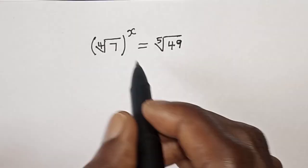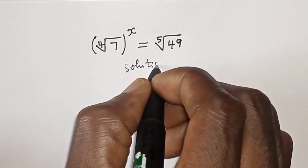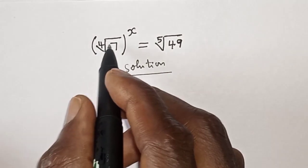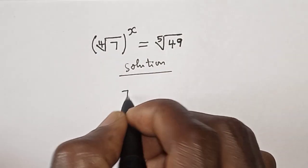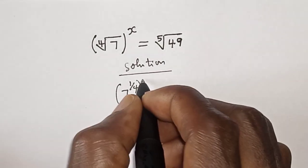But before we proceed, please don't forget to like, share, comment, and subscribe. Solution: fourth root of 7 can be written as 7 raised to power 1 over 4, raised to power x.